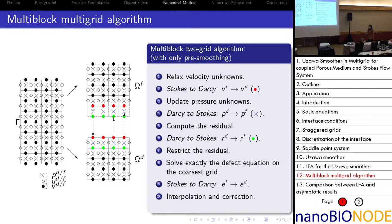By recursion, the multigrid algorithm follows straightforwardly. This algorithm requires little communication, and during communication the transfer is always in one direction, making it easy to implement in parallel. Furthermore, the communications are performed at every level of the grid, not only on the finest grid.